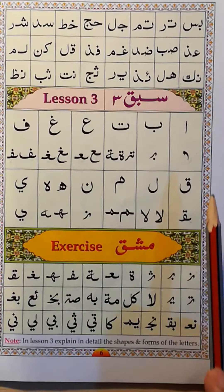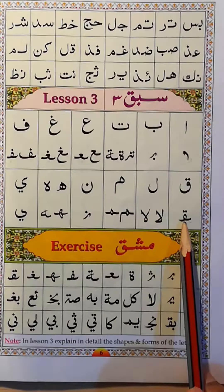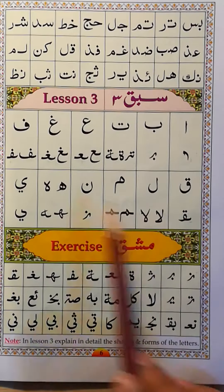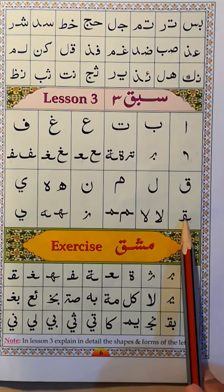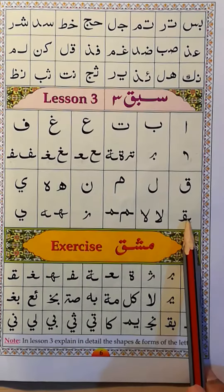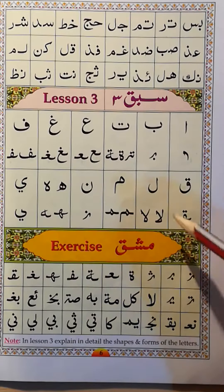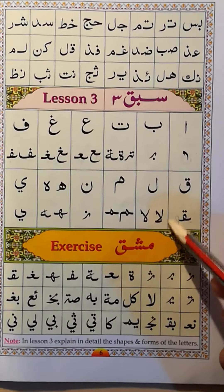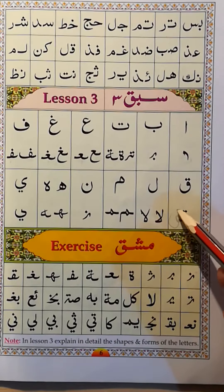Qaf — this is a qaf. This is the shape of the qaf in the middle of the word. Same shape as fa, but two dots on the top. If it is at the end of the word, then it will look like this — and two dots.